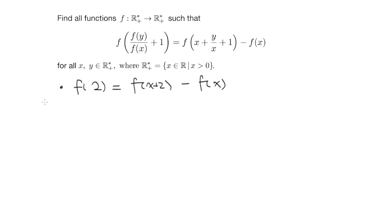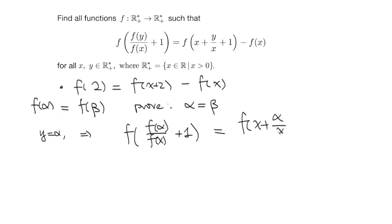So to prove that f is injective, we assume that there are two numbers, alpha and beta, such that f(alpha) equals to f(beta). And we want to prove that alpha equals to beta. So let's apply this identity with y equals to alpha and an arbitrary x. So y equals to alpha and this gives f of f(alpha) over f(x) plus 1 equals to f of (x plus alpha) over (x plus 1) minus f(x).